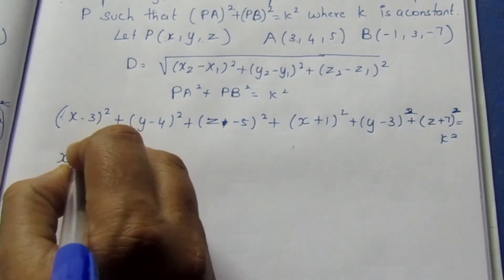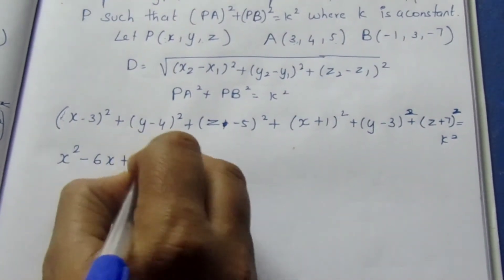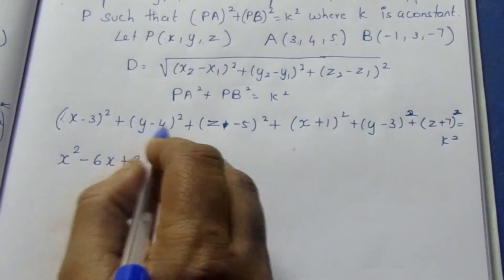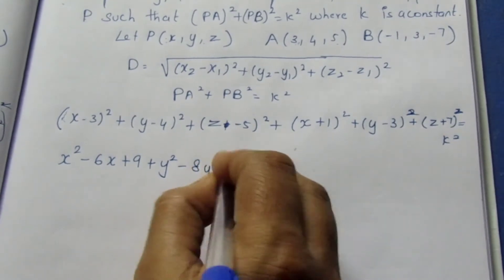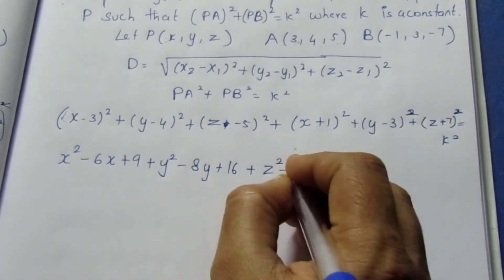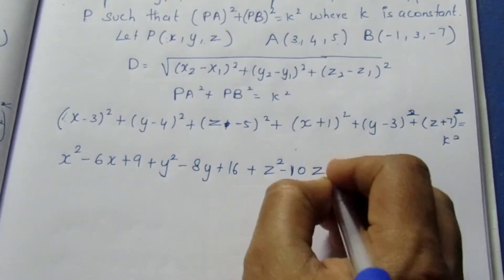Now X square minus 6X plus 9 plus Y square minus 8Y plus 16 plus Z square minus 10Z plus 25.